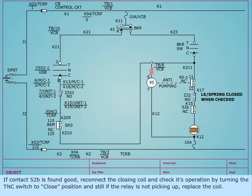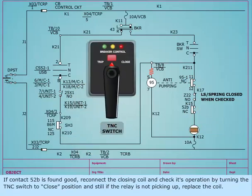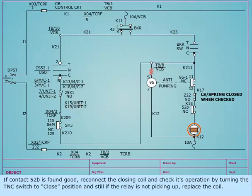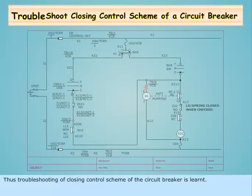reconnect the closing coil and check its operation by turning the TNC switch to close position. If the relay is still not picking up, replace the coil. Thus, troubleshooting of the closing control scheme of the circuit breaker is learned.